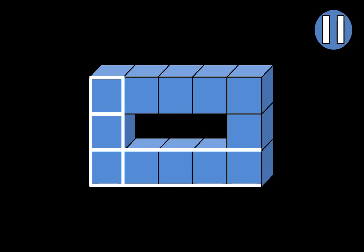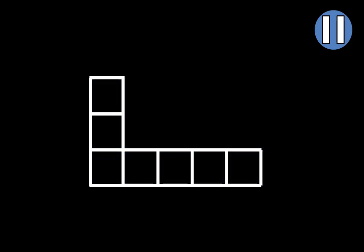Next, extend these lines to the right. You can see that they will be longer. And close them in to make four new squares — one, two, three, four. Now it looks like a wide L.